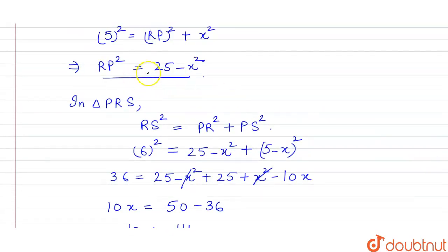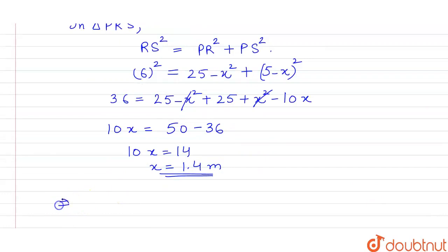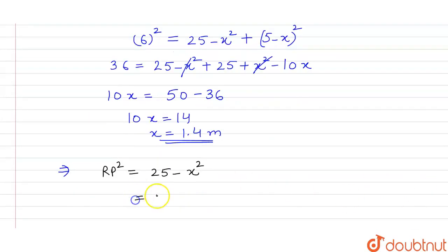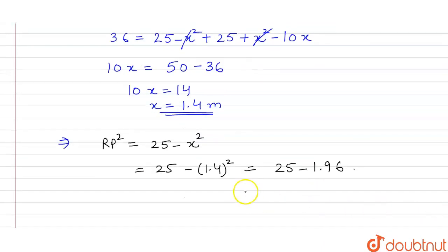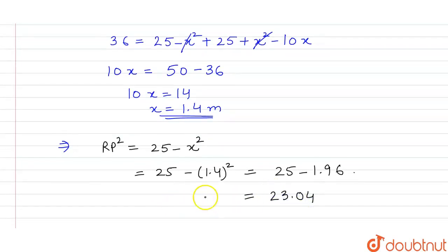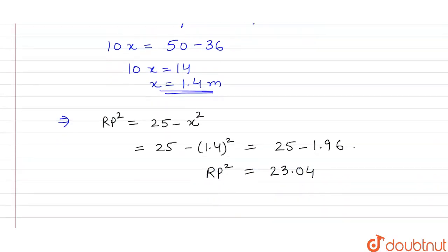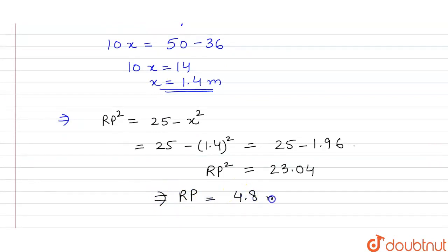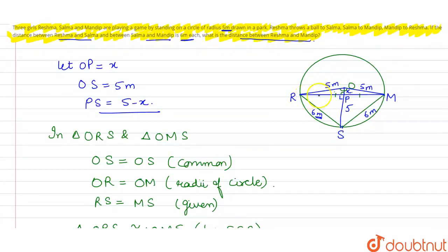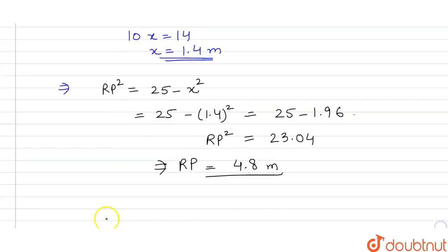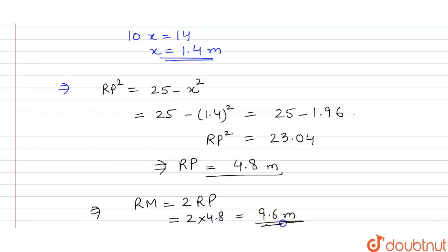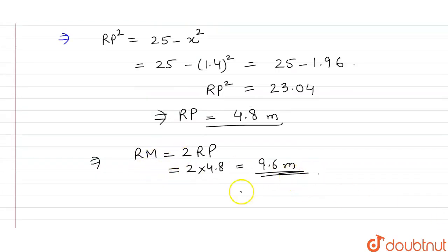X की value आ गई। अब RP की value निकाल सकती हूँ — RP² = 25 − X² = 25 − (1.4)² = 25 − 1.96 = 23.04। तो RP = √23.04 = 4.8 meter। अब हमें निकालना था RM, और हमें पता है RP equals PM। तो RM = 2 × RP = 2 × 4.8 = 9.6 meter। तो यही distance आपको निकालना था — Reshma और Mandip के बीच में, that is 9.6 meters। Thank you।